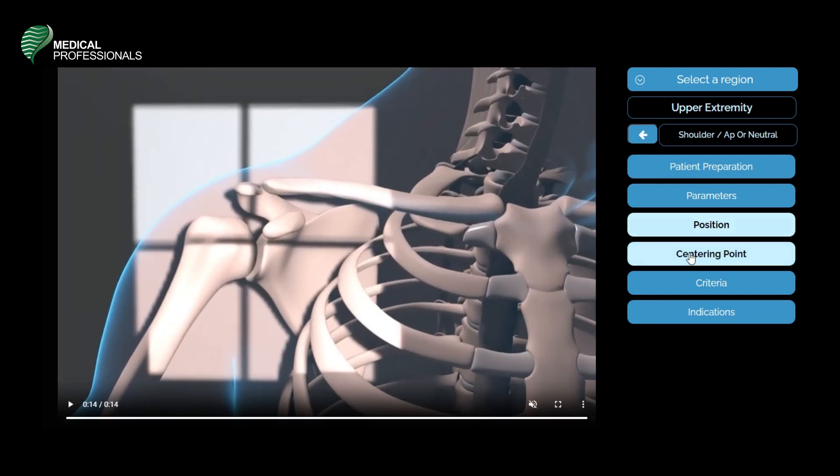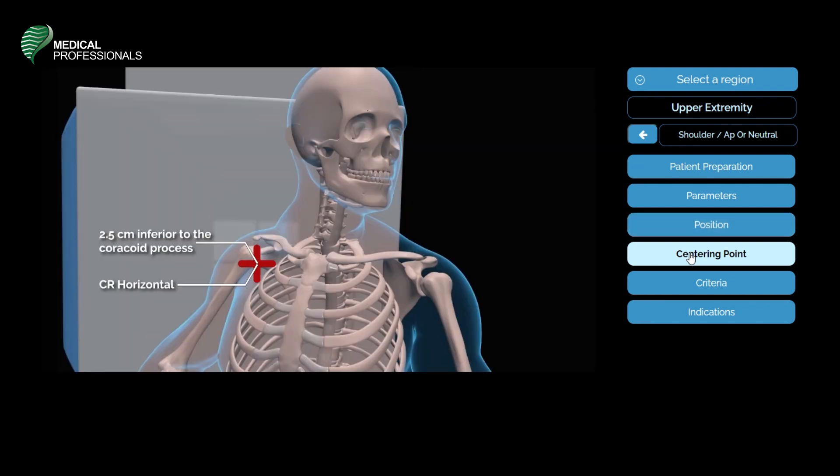The central ray will be horizontal and perpendicular to the image receptor. The centering point will be 2.5 centimeters inferior to the coracoid process.